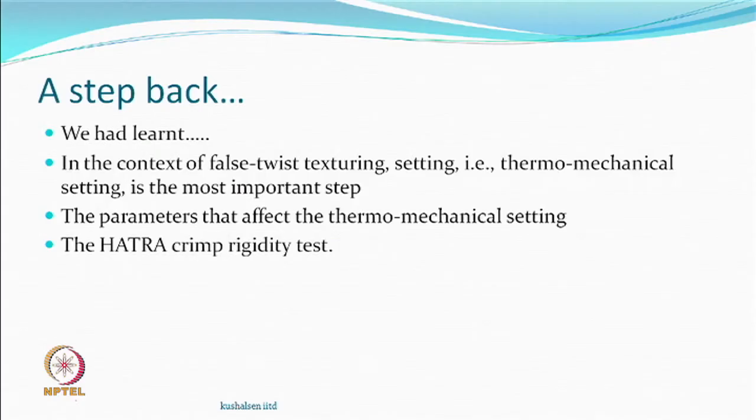We continue this class and take the story further on false switch texturing. Part of characterization and optimization - part of characterization we have done, and this time we will try to complete some of the things which are left out. Optimize means that you have some parameters on which your properties depend, and hopefully you will have some control on finding how to change those and get to an optimum property. We may go to the next class as well.